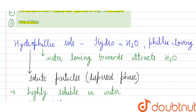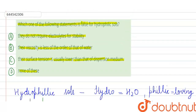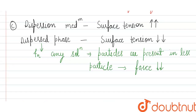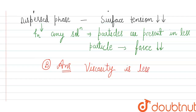So, which one of the following statements is false for hydrophilic sols? Our option B is the correct answer — that is, 'their viscosity is less of the order of that of water' is the false statement. So our option B is the correct answer. Thank you, students.